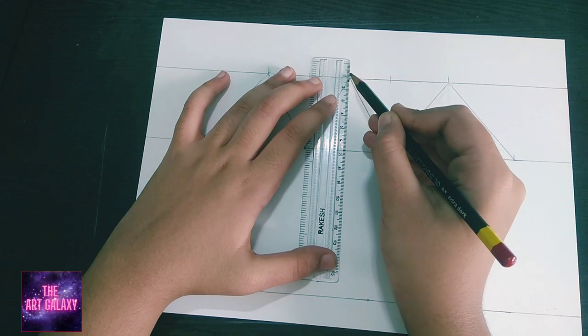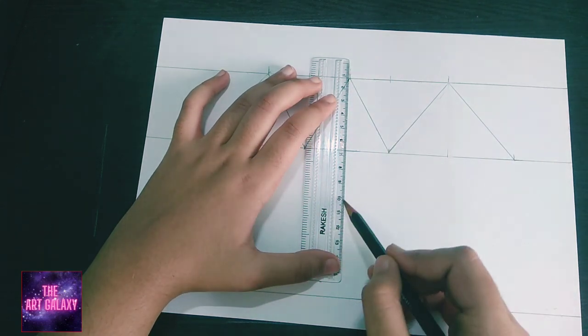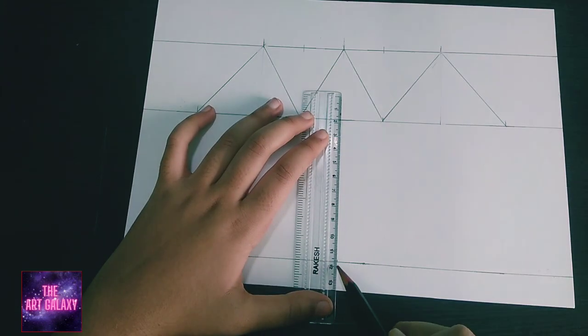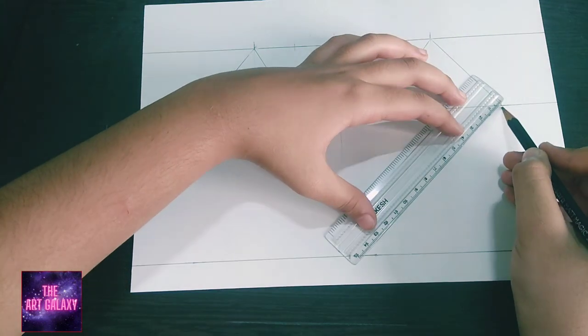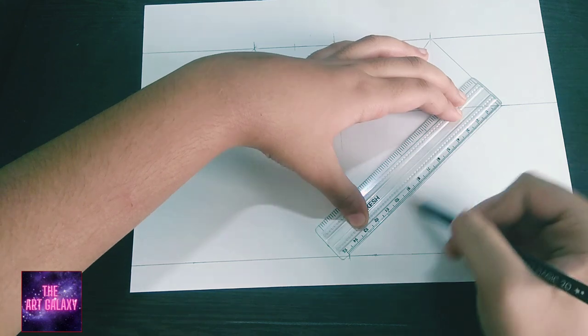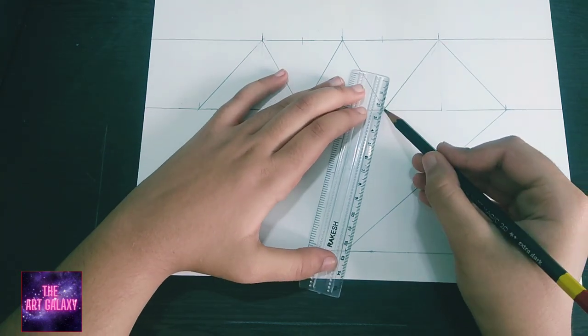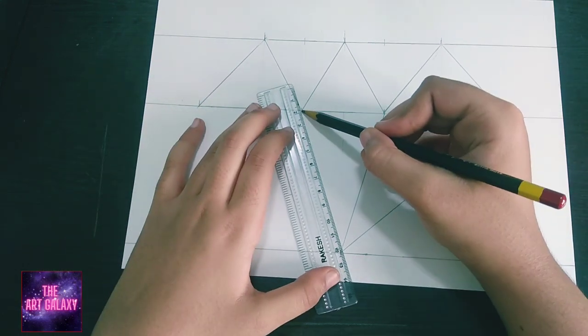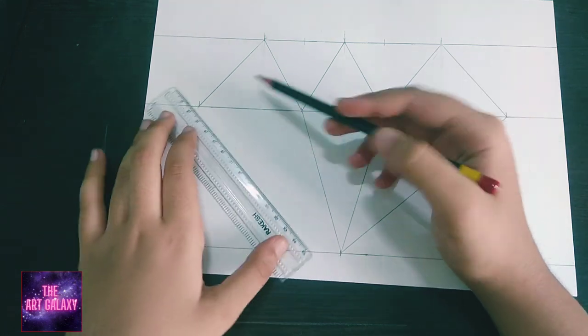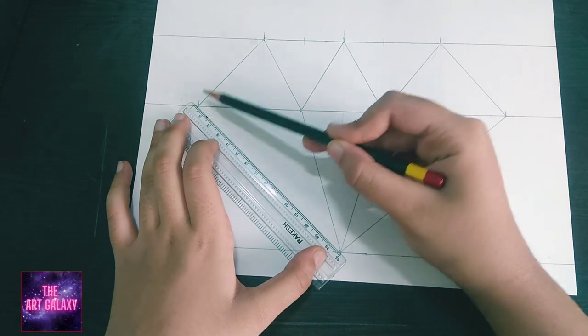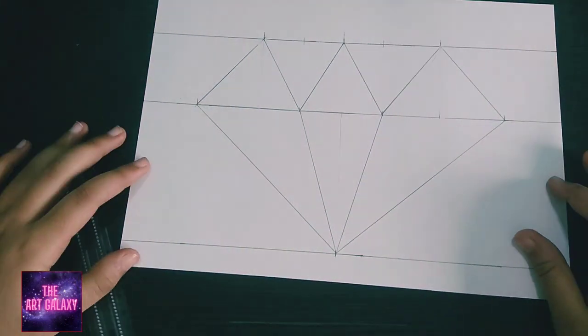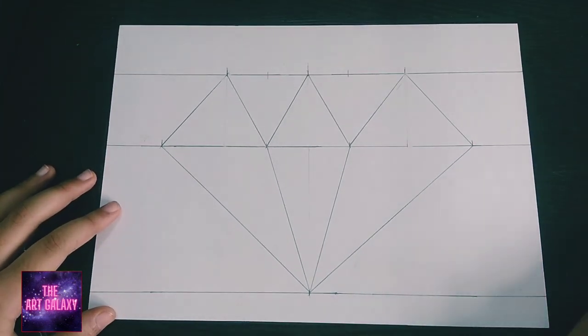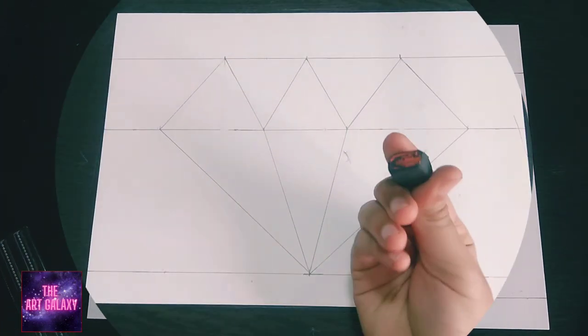Now from the middle point which we have drawn, we have to draw a similar point on the last line as well. This would be the bottom center of our diamond. Connect these points. Make sure your lines are quite straight. Now as you can see, our outline of the diamond is ready. Now we have to lightly erase these lines.